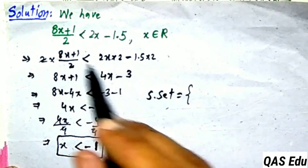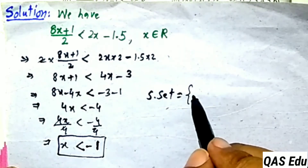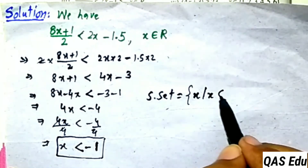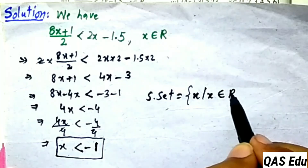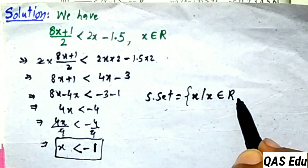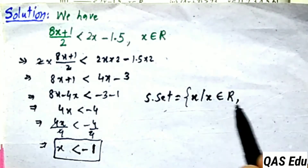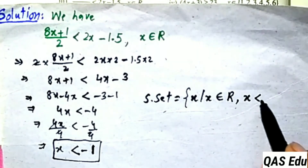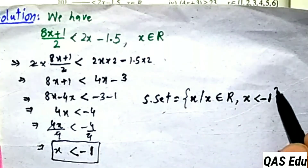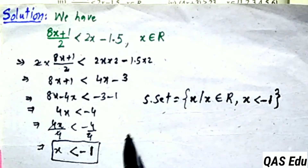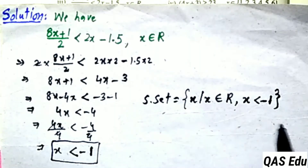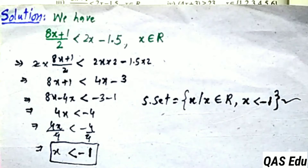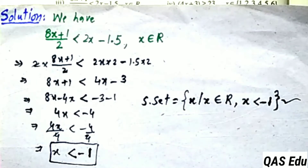The solution set in set-builder notation is: {x | x belongs to real numbers, such that x is less than minus 1}. That is, all real numbers less than minus 1. This is the solution set for this linear inequality.